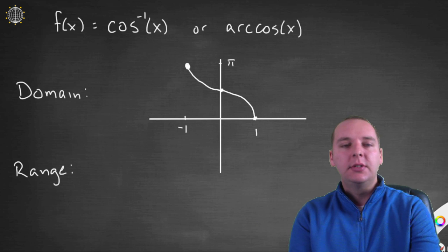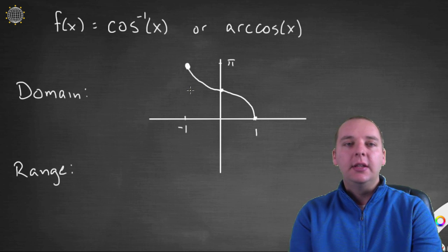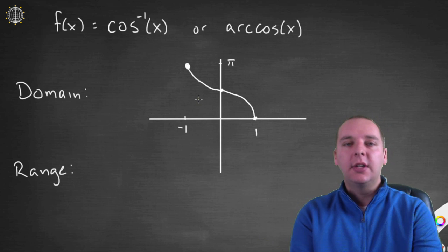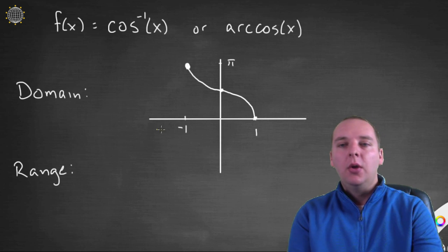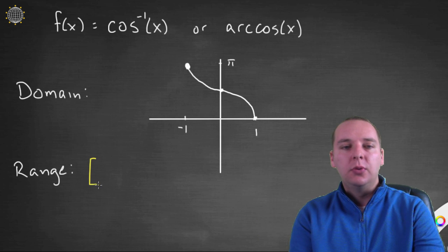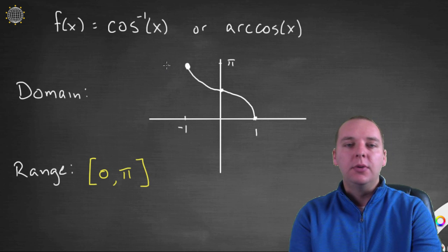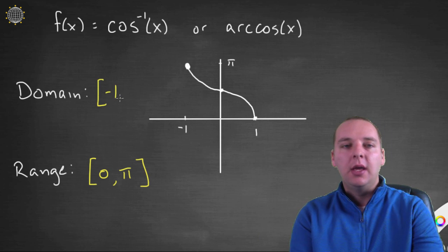Here's inverse cosine. The restricted domain on the original cosine function was 0 to π, which means the range of inverse cosine goes from 0 to π. And since the original range of cosine was -1 to 1, the domain of inverse cosine will be -1 to 1. The graph of arc cosine looks something like this.